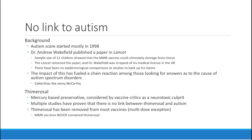As healthcare professionals, we can hopefully educate our patients and families. The underlying story is there is no link to autism. Where this first came up was in the late 1990s — a physician named Andrew Wakefield published a paper in The Lancet with a sample size of only 12 children studying the MMR vaccine, claiming it could ultimately damage brain tissue. It didn't say these kids would develop autism, it was all hypothetical. The Lancet ended up retracting the paper after public and peer review outcry.